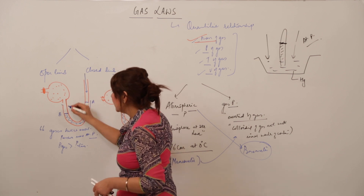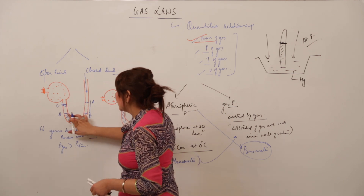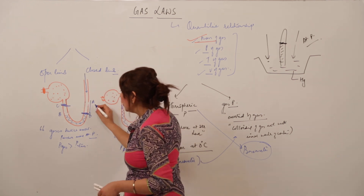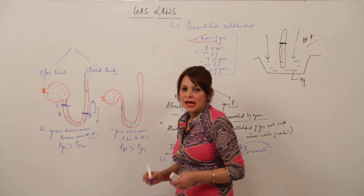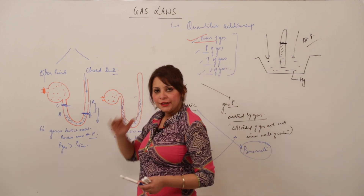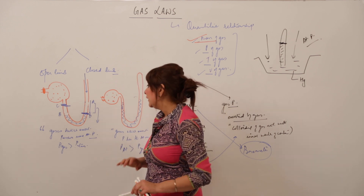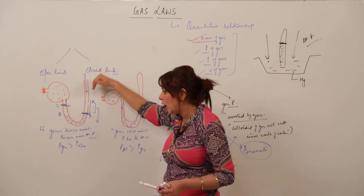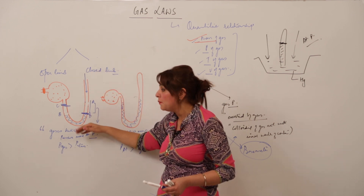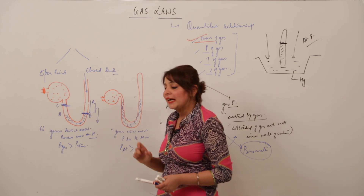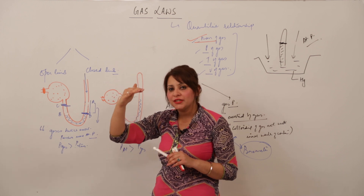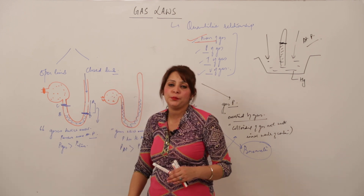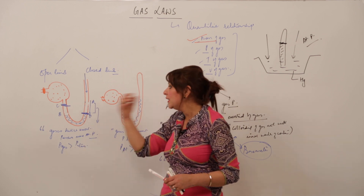So the mercury in the longer limb comes down to a new position and rises in the shorter limb to a new level. The difference between these two mercury levels indicates the gas pressure. Initially both mercury levels are equal; when the atmosphere exerts pressure it pushes mercury down in one limb and up in the other, and the difference in levels gives the gas pressure.